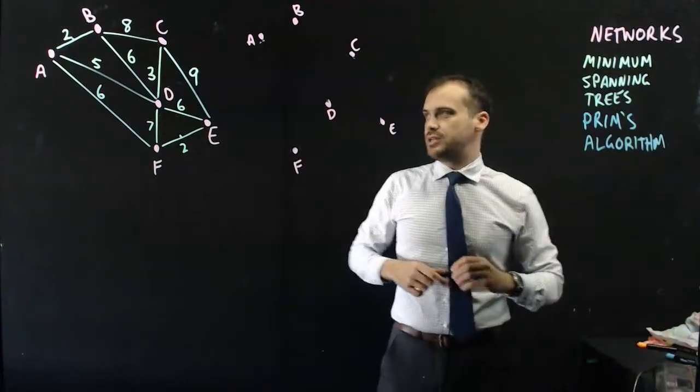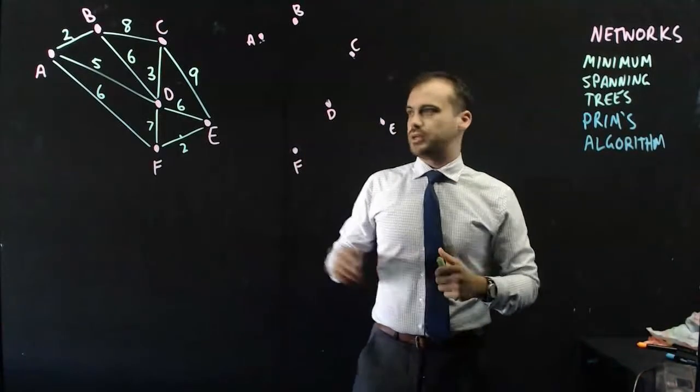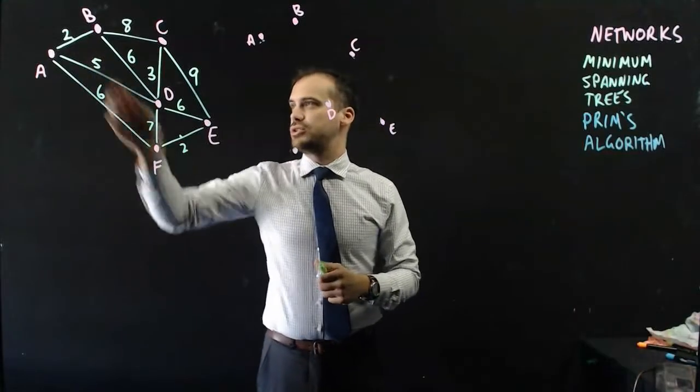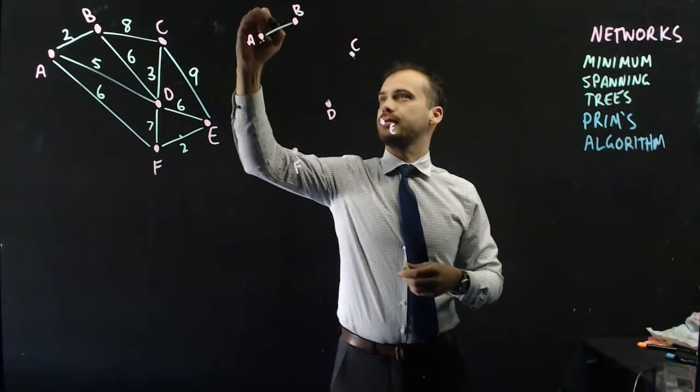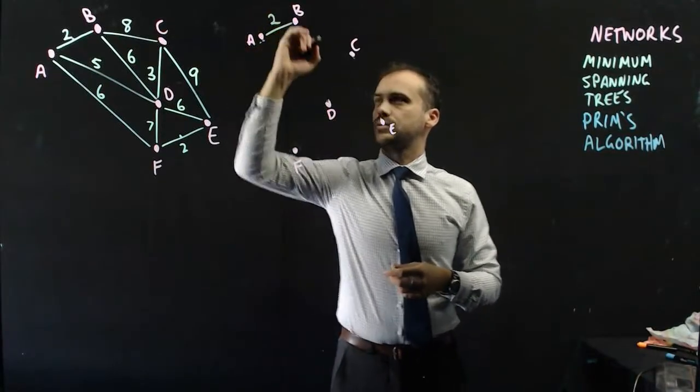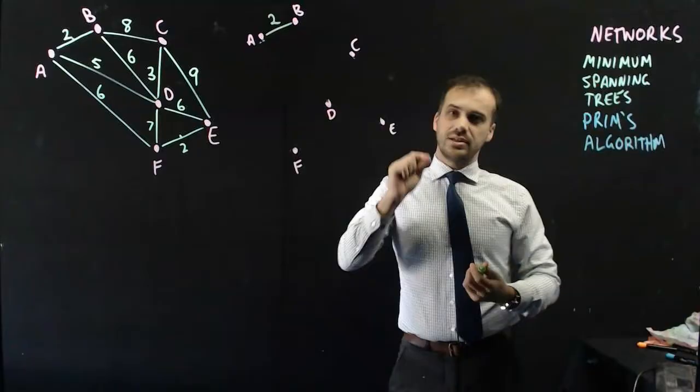We're going to need to find the minimum edge. There's a 2 here and a 2 here, so we're going to draw in that 2. And now this is where it diverges.